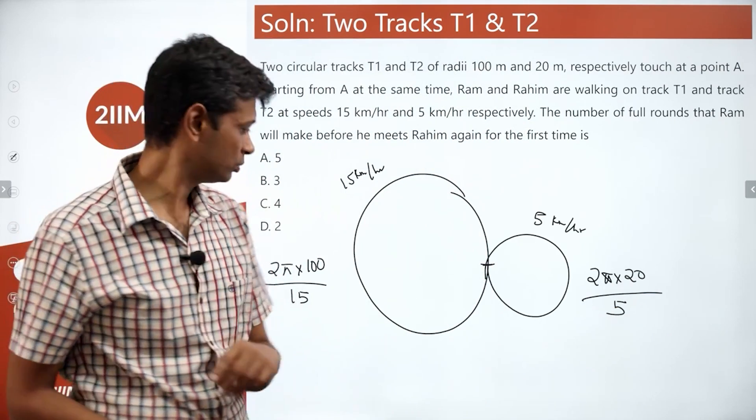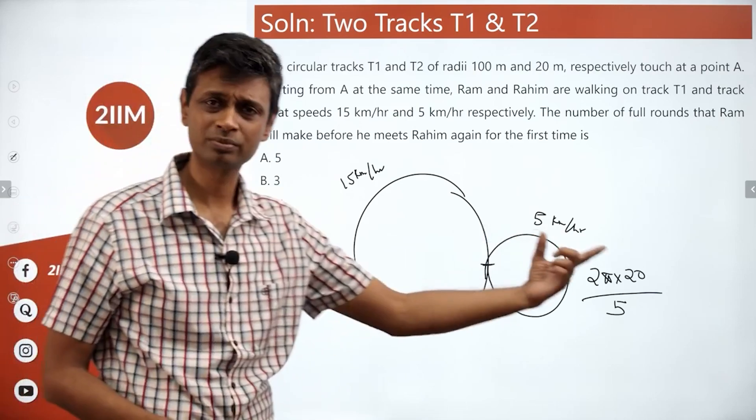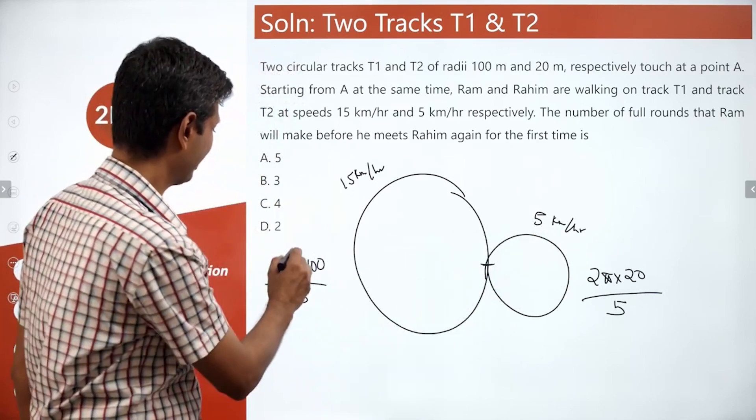This one is 2 pi into 20 by 5. Now, what are you trying to do? You see, we're going to compare these two. The 2 pi gets knocked off.